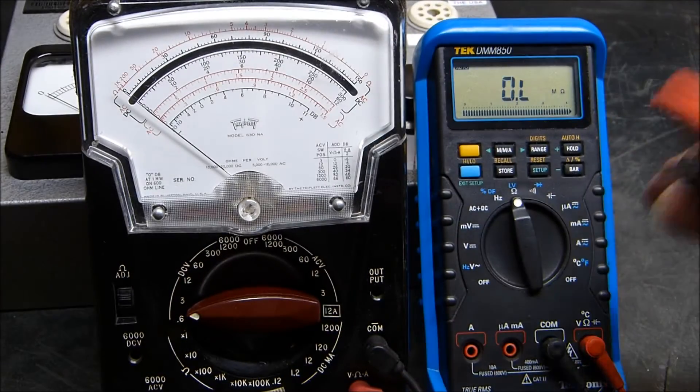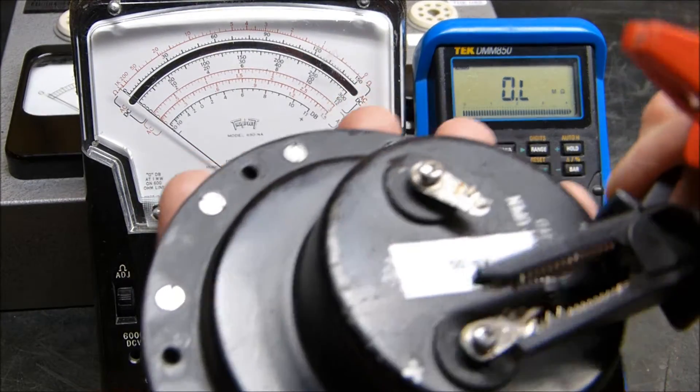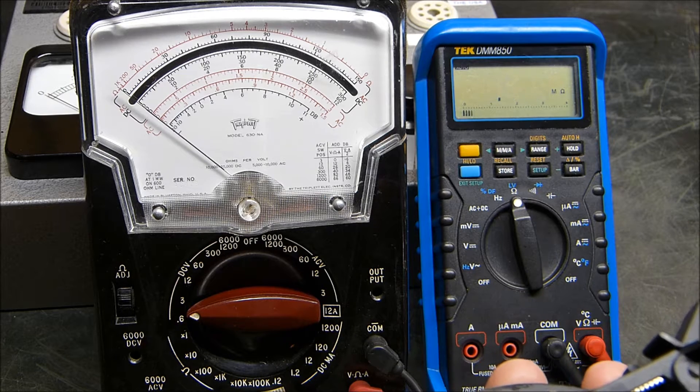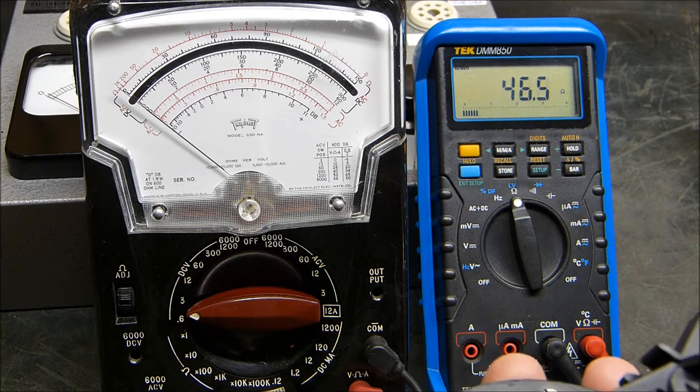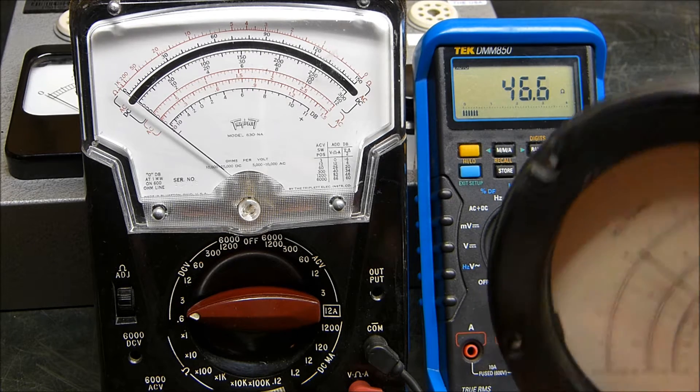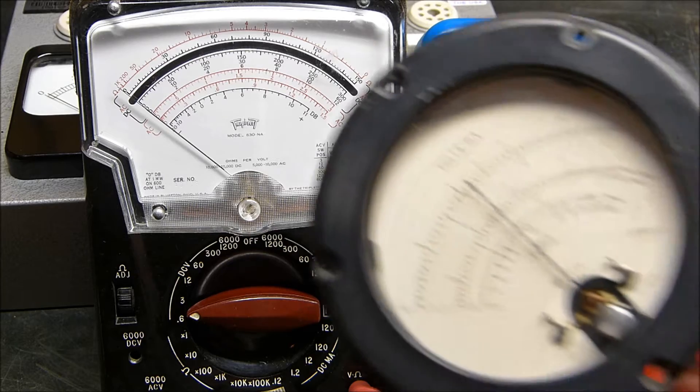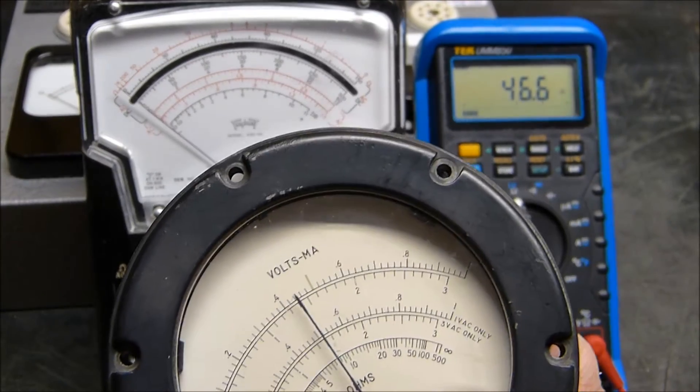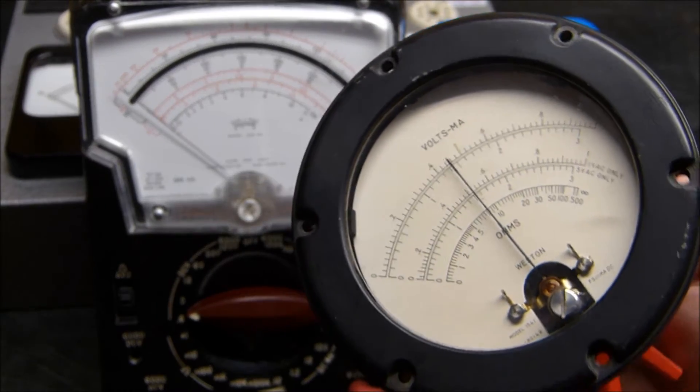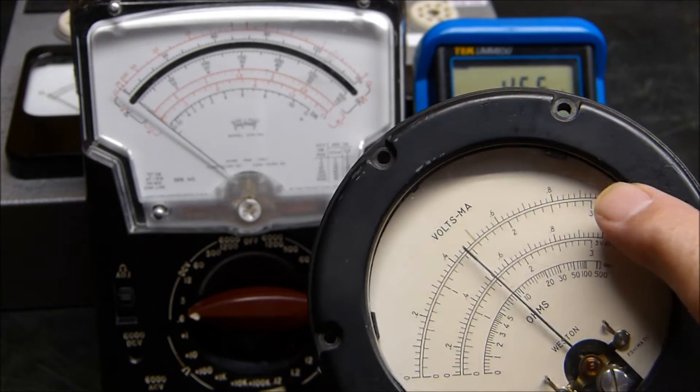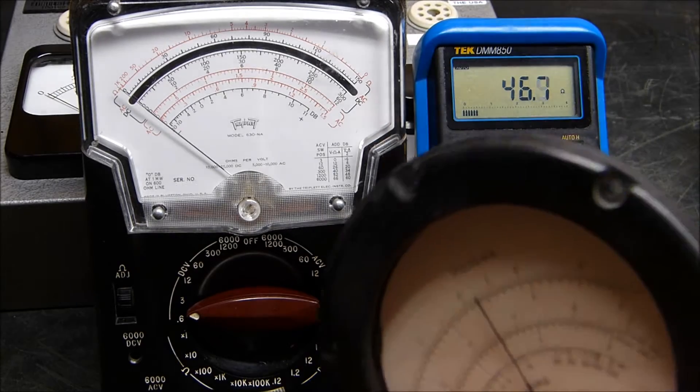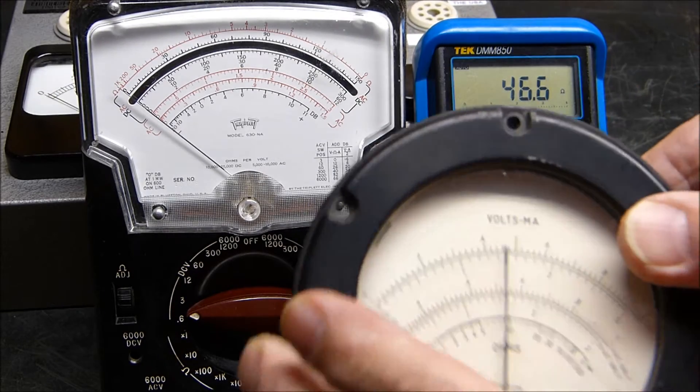If we put our ohm meter across it, let's see what our resistance is. That's 50 ohms and it's reading about half scale. See, it doesn't hurt the meter, it didn't slam it. It's not a 46.6 ohm meter, it's a 50 ohm meter. For reasons I cannot explain, if it drives it full scale it seems to read it more accurately. This is a 50 ohm meter, 1 milliamp.